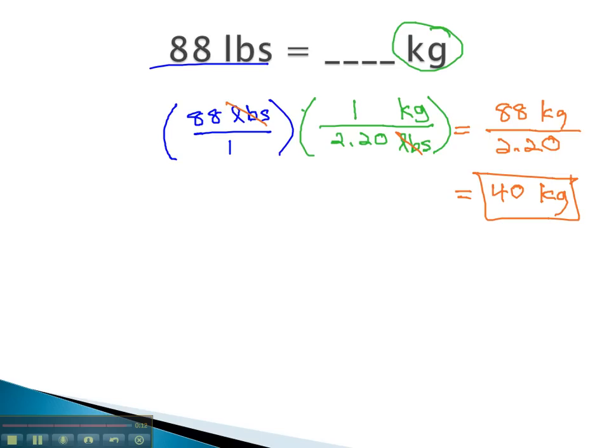Converting units with dimensional analysis is a simple process of just identifying the correct conversion factor, putting the units in the opposite place so that they divide out, and then finding the relationship off of a conversion factor chart.